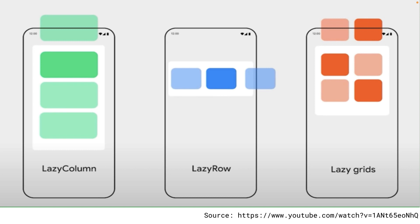Jetpack Compose 1.2 provides you with lazy column, lazy row, and lazy grid which consists of lazy horizontal and lazy vertical grid. Jetpack Compose 1.0 provided lazy row and lazy column as stable APIs and included lazy vertical grid as an experimental API. Lazy horizontal grid was added as an experimental API in Compose 1.2 alpha 0.5. However, with Jetpack Compose 1.2 beta versions, all these APIs are stable.